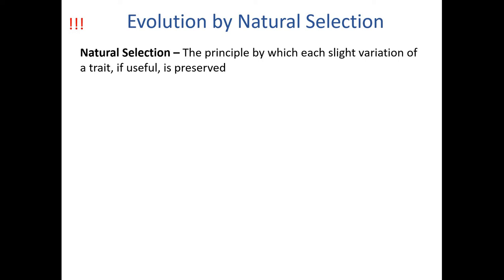Coming back to evolution by natural selection — this slide is really important, basically just memorize this slide, it's one of the most important things we're going to learn. Natural selection was Charles Darwin's idea, and it's the principle by which each slight variation of a trait, if useful, is preserved. Natural selection is about adaptation to the environment and keeping traits which help an organism adapt either to a changing environment or to fit better into a stagnant environment.